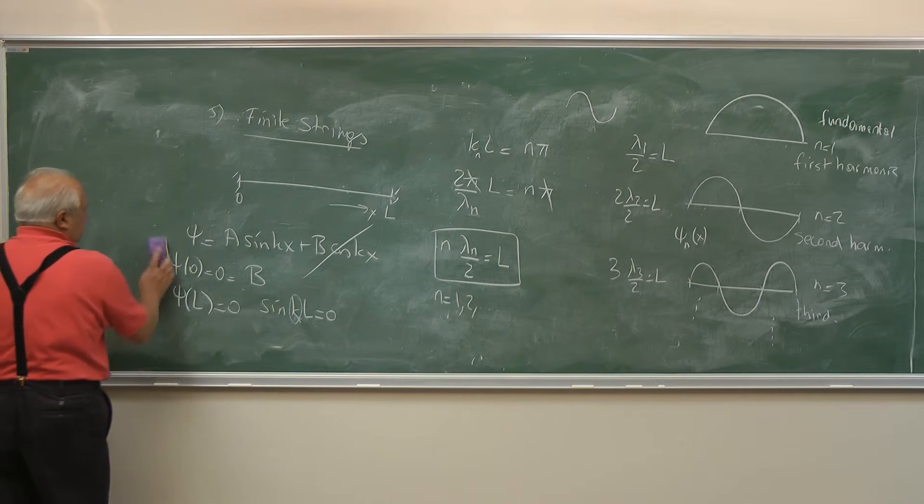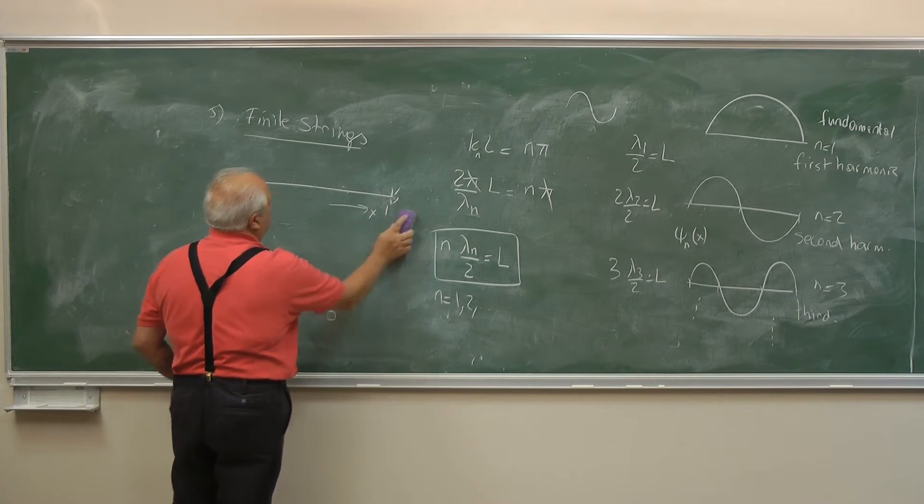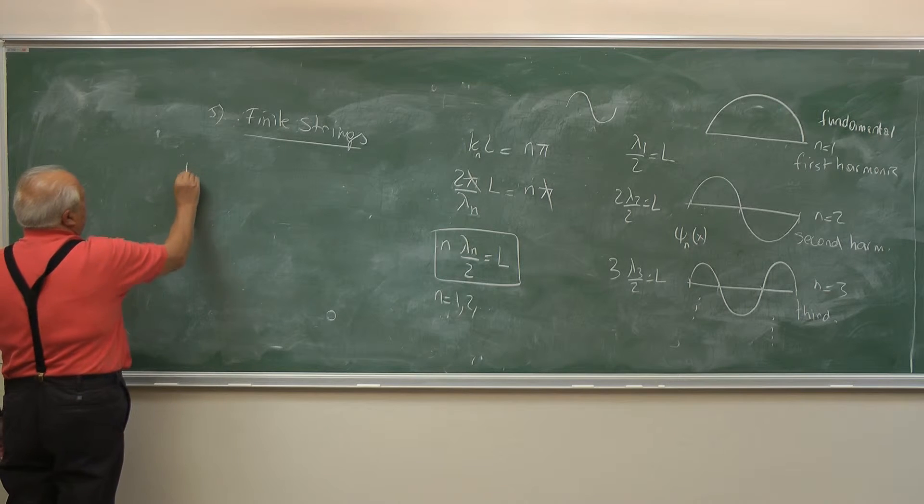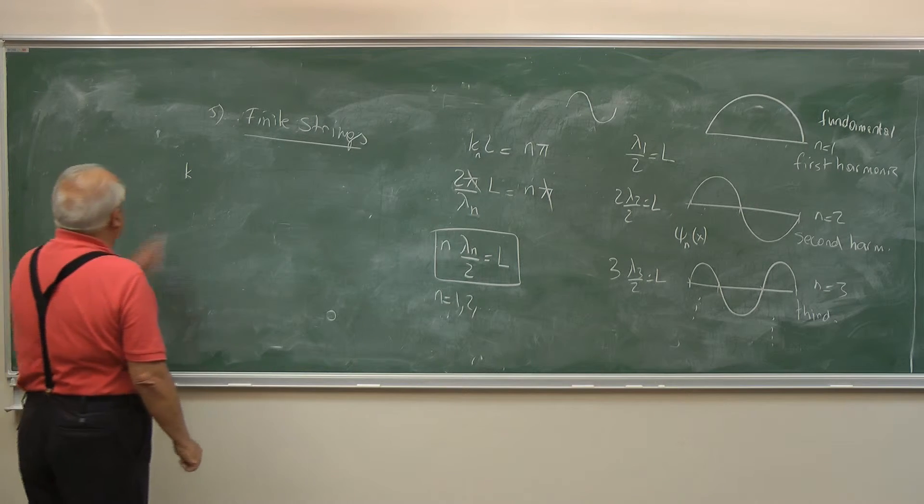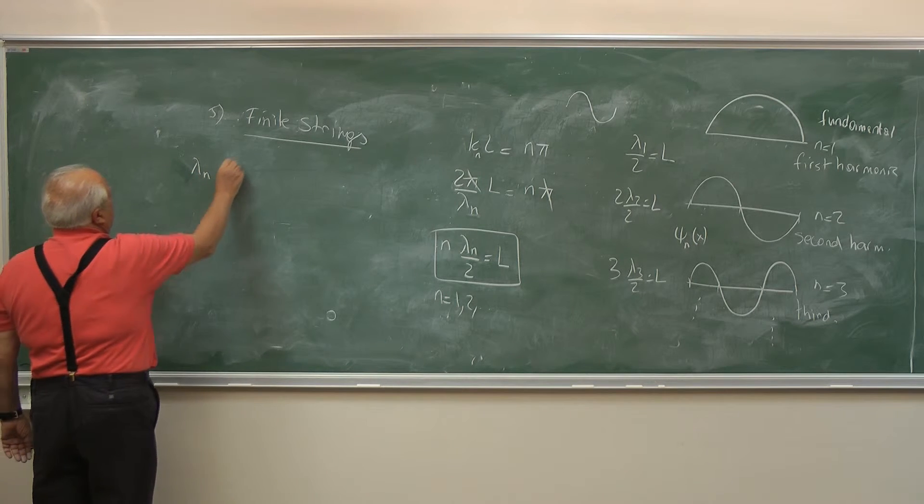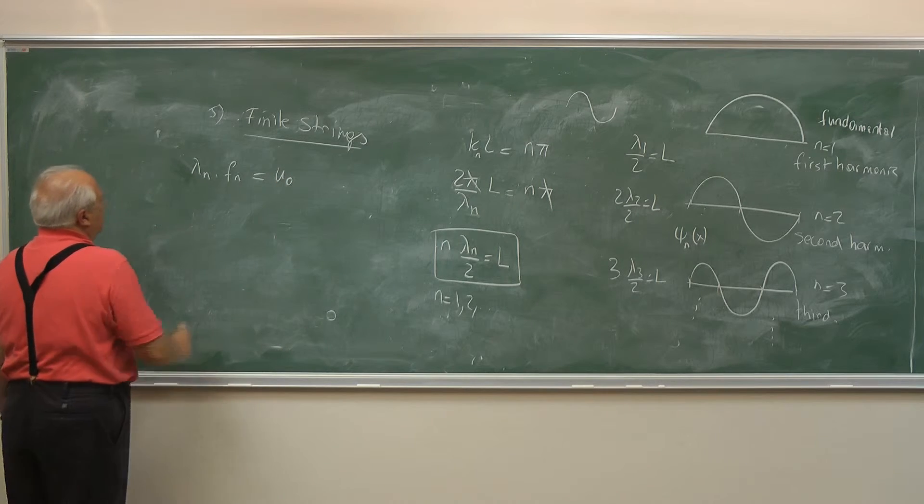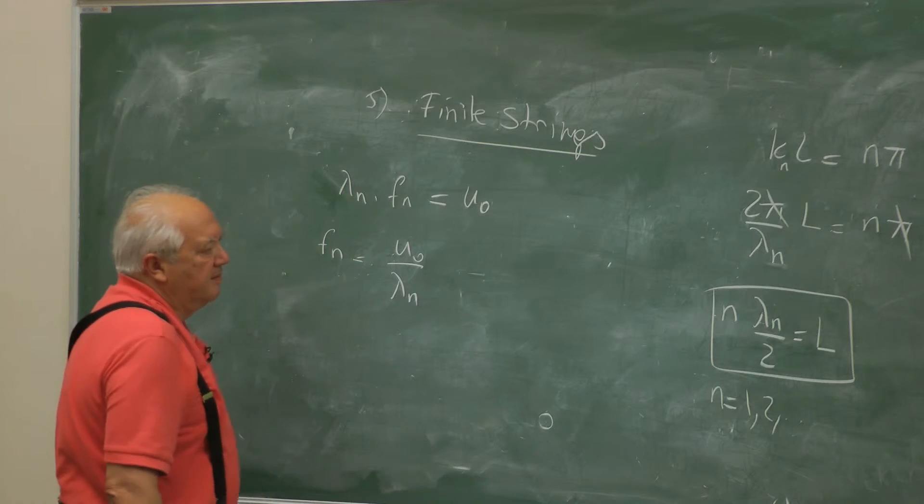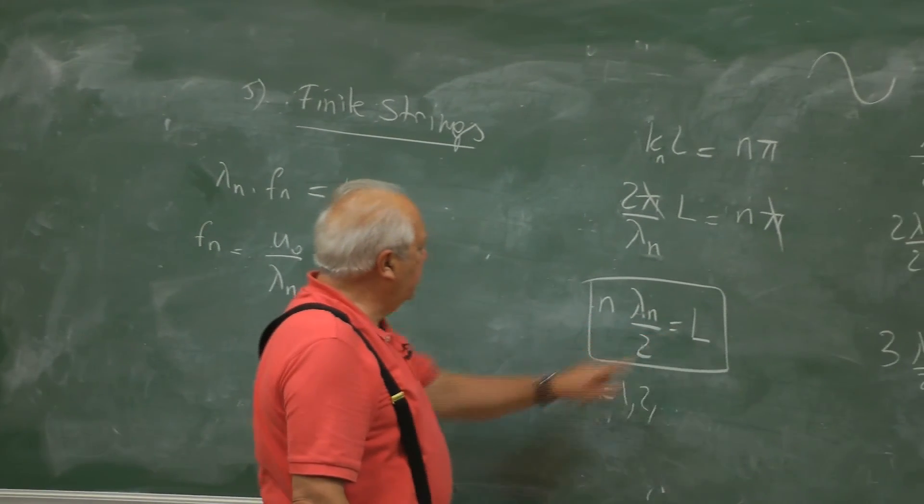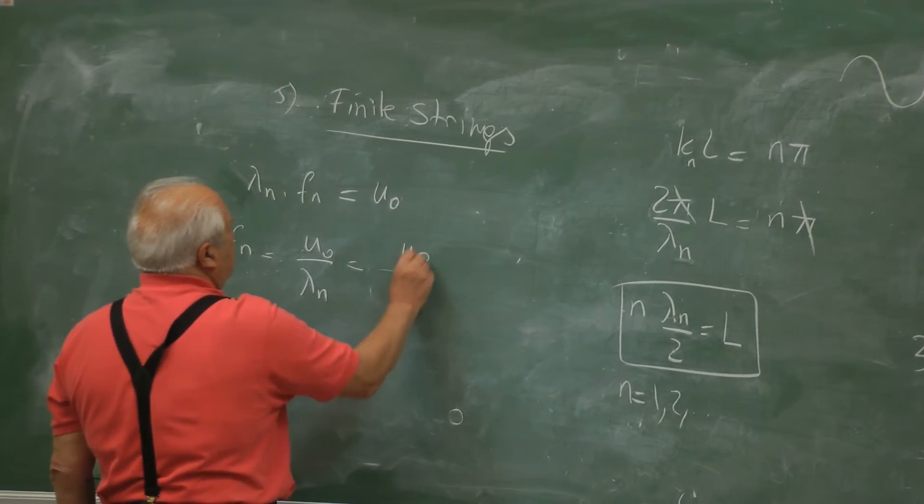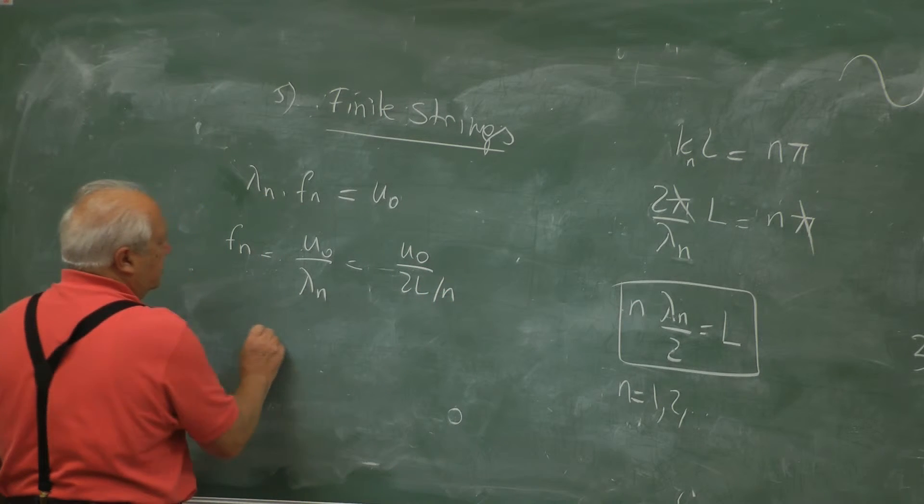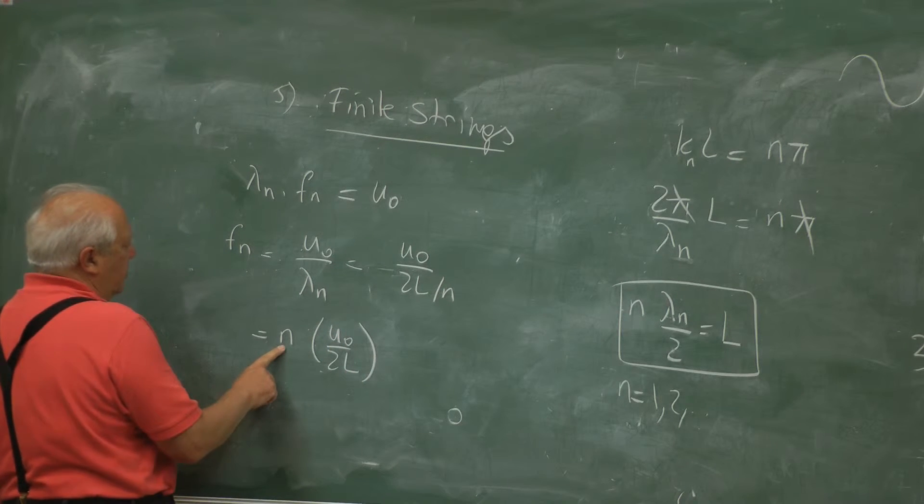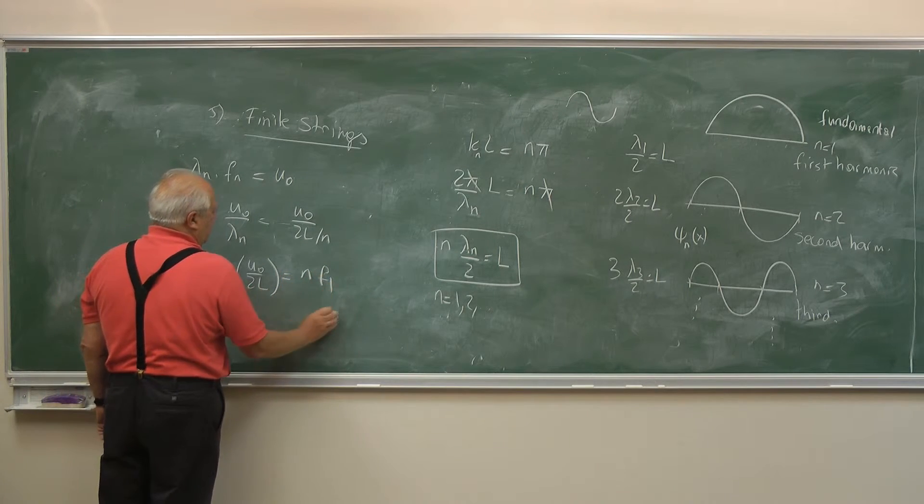So let us consider the frequencies. λₙ times fₙ must be equal to u₀. So fₙ = u₀/λₙ. u₀ and λₙ is 2L over n times u₀ over 2L, or n times u₀/2L. For n = 1, this is f₁. So this is n times f₁.